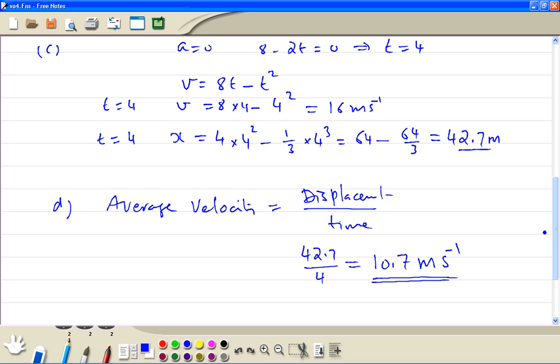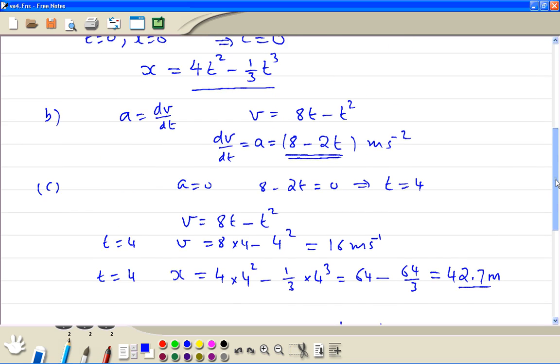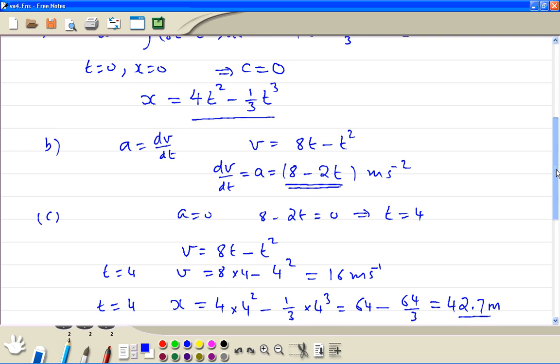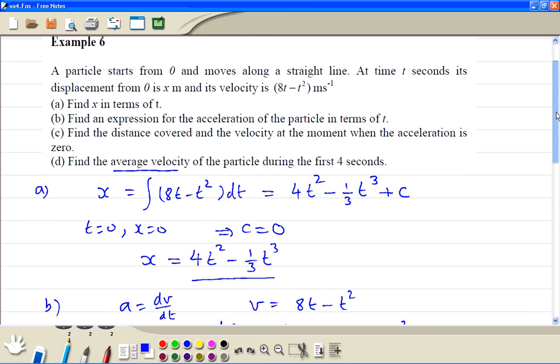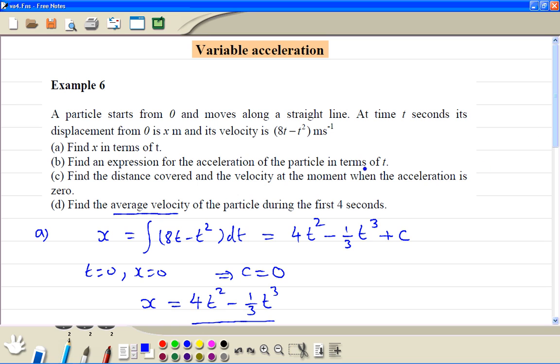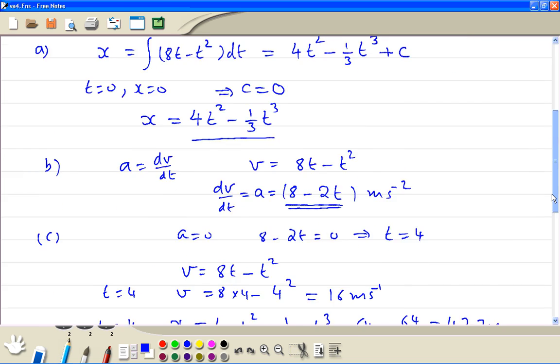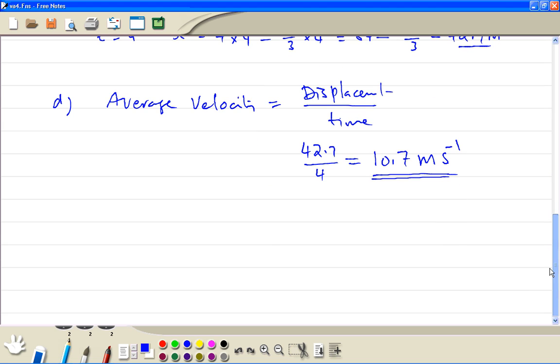Now the assumption is the velocity was positive during the first four seconds, because it's a continuous curve and it was positive if you plot the graph for the first four seconds.